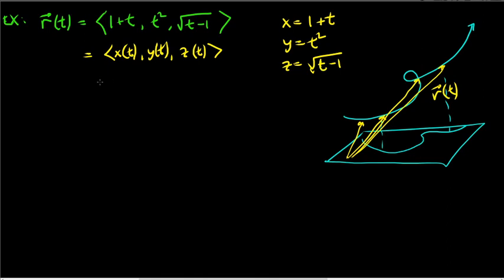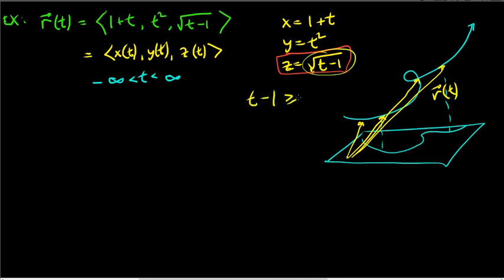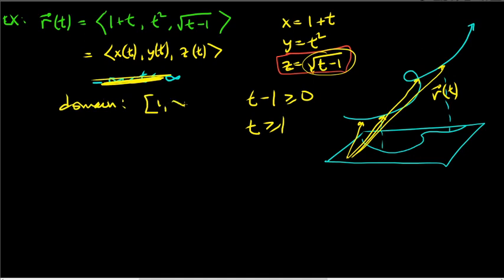We have to be careful about the domain. Look at the z-component: √(t − 1). If t < 1 that gives an imaginary number, which we're not using in this course. So we need t − 1 ≥ 0, meaning t ≥ 1. The domain of this vector-valued function is [1, ∞).